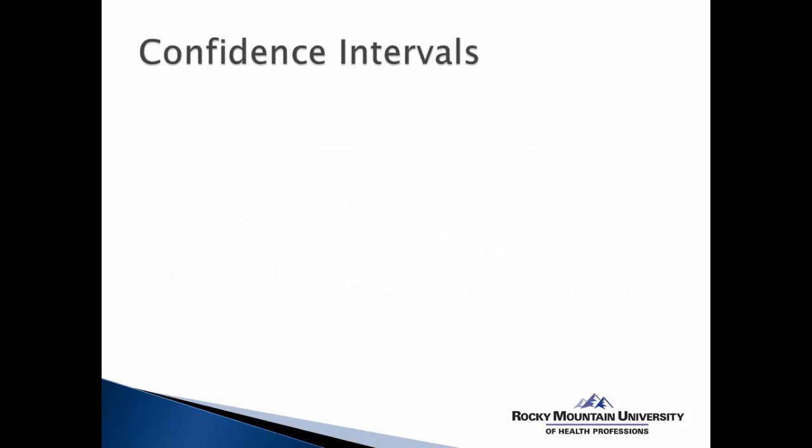Now the next is confidence intervals. This is a little tougher for many people to understand and confidence intervals are that range of scores in which a population mean or a population parameter may actually fall.